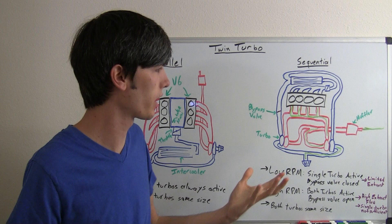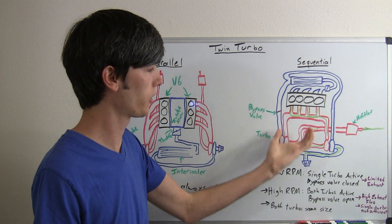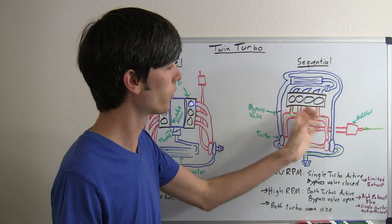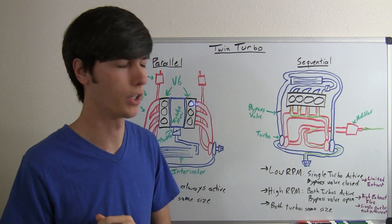Now, why would you only have one turbo spooling at low RPM? Well, the reason is you don't have that much exhaust. So, you couldn't spool up both of these turbos with the limited amount of exhaust that you're making. So, you send all of it to one turbo, and that's enough to spool it up and create boost for the engine.